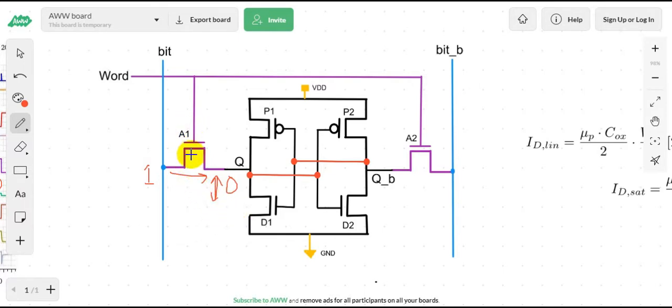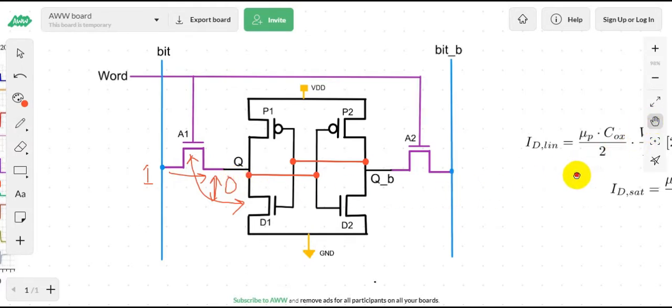That means the current flow from the Q to D1 must be greater than the current flow from A1 to Q. If we look at the current equation...